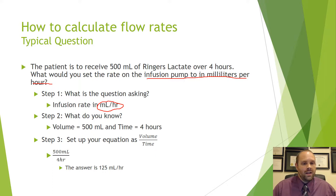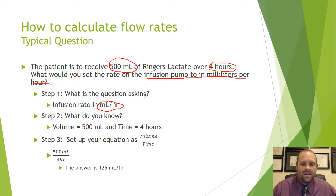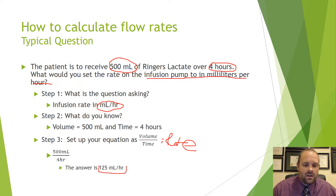What do we know? Reading the question, we have 500 milliliters of Ringer's lactate infusing over four hours. We take the volume, we take the time, and we put volume over time — because that is how we get a rate. So volume over time: 500 milliliters over four hours. When you plug that into your calculator, you get 125 milliliters per hour.